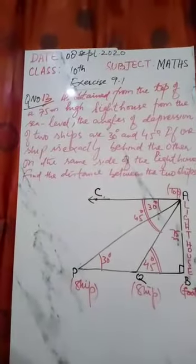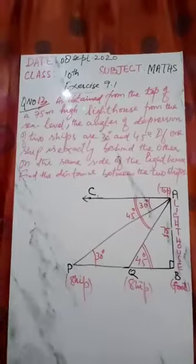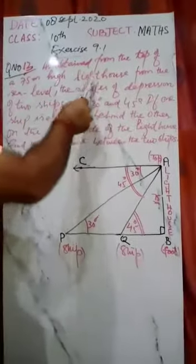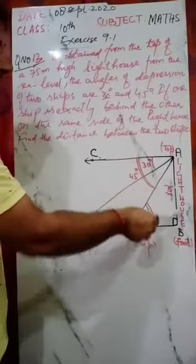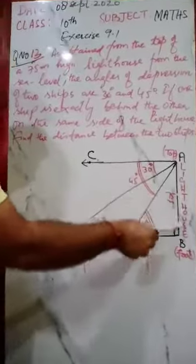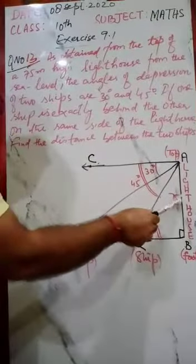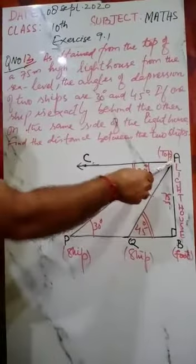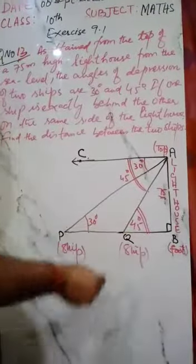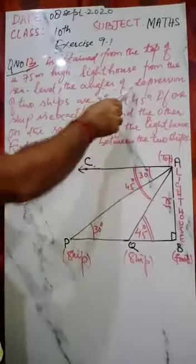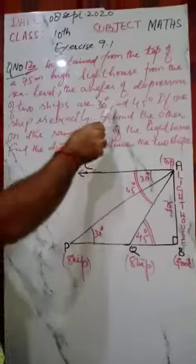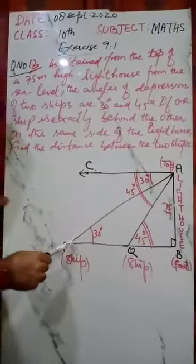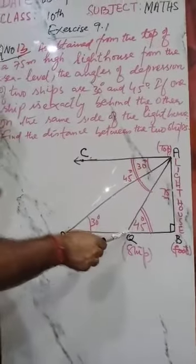The question is: as obtained from the top of a 75 meter high lighthouse, the angle of depression of two ships are 30 degrees and 45 degrees.